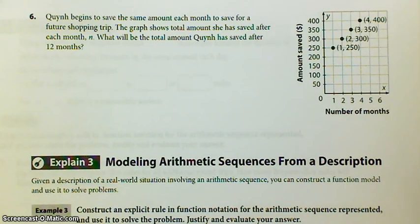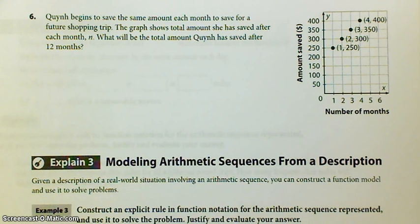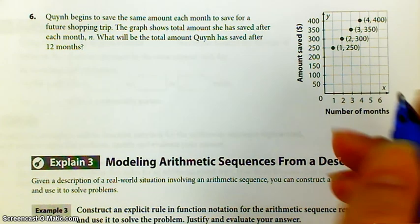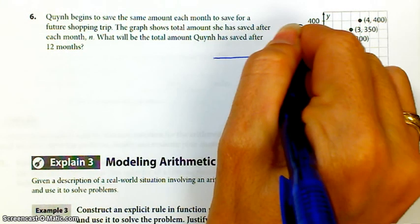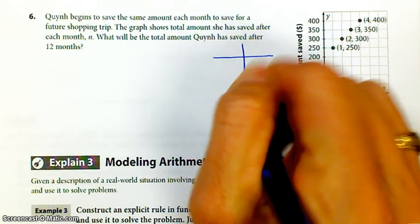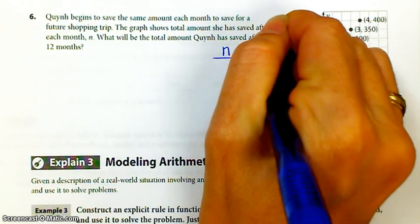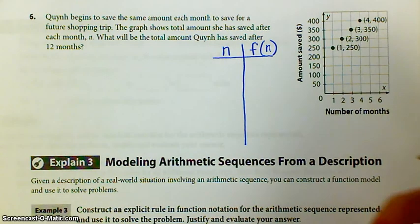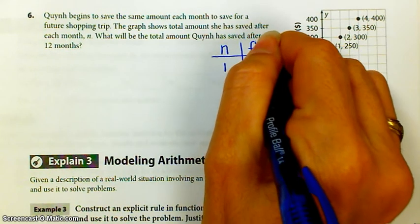Quinn begins to save the same amount each month to save for a future shopping trip. The graph shows total amount she's saved after each month n. What will be the total amount Quinn has saved after 12 months? So we just have 4 points on the graph. First thing I'm going to do is this.